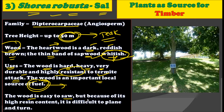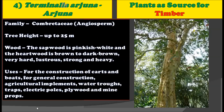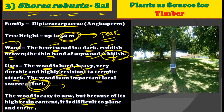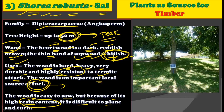This wood is easy to saw, but because of its high resin content it is difficult to plane and turn, and that is why it can only be used where straight wood is required. This quality of being so hard is a disadvantage for Shorea robusta, because from the human point of view, we often use timber which is not only durable and hard but can also be shaped desirably.